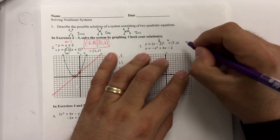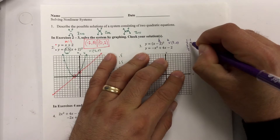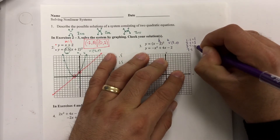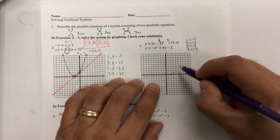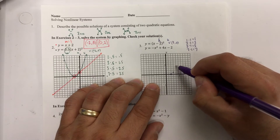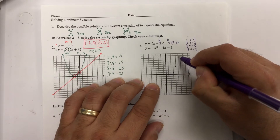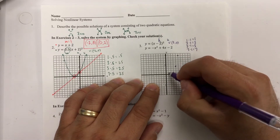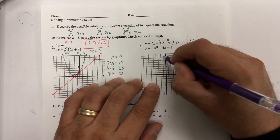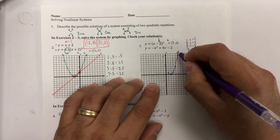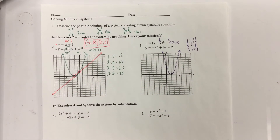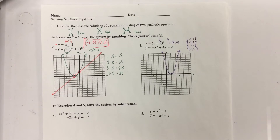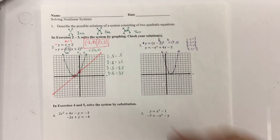From the vertex at 2, 0: right 1, up 1; right 1, up 3 (that's 1, 2, 3); right 1, up 5 (1 through 5). We don't go further because 7 goes off the graph. On the left side: left 1, up 1; left 1, up 3; left 1, up 5. Make the graph the best we can — and there's my first quadratic, drawn in purple. The second one will be in orange.